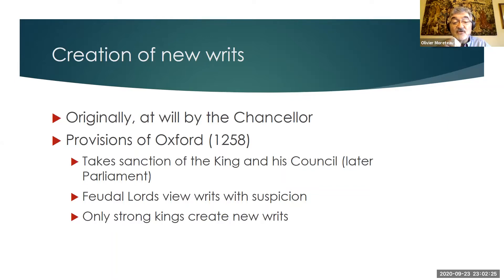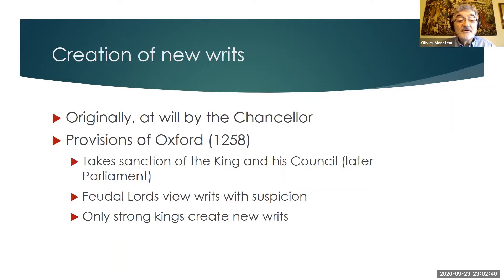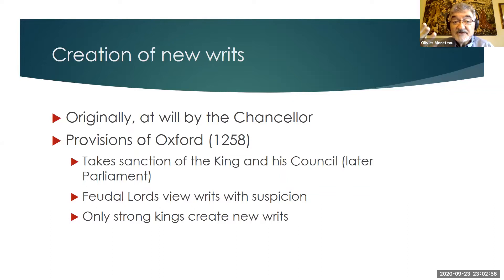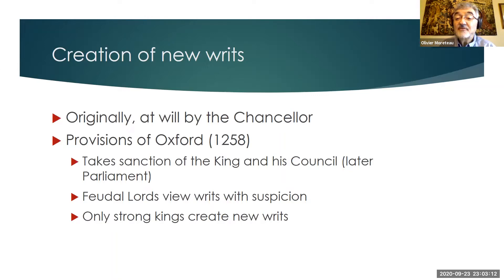In the 13th century, in 1258, some provisions were adopted — a piece of legislation known as the Provisions of Oxford, where the king happened to reside with his council at the time. It was agreed that it would take the sanction of the king and his council, and later parliament, to create a new writ. So new writs could only be created by way of parliamentary decision, and it took a strong king to push for new writs against the constant resistance of the lords and local communities.